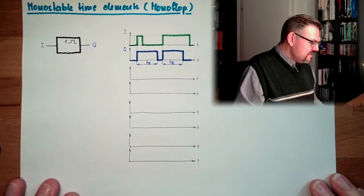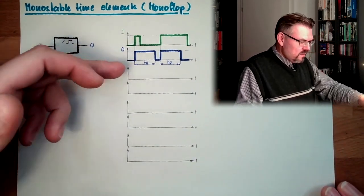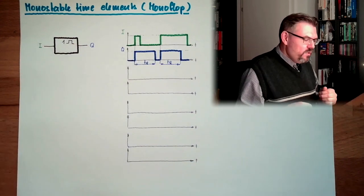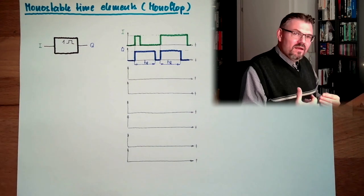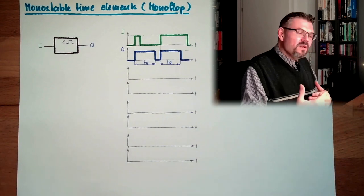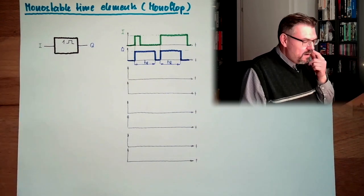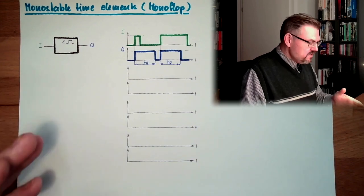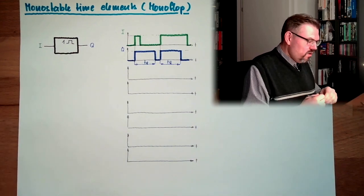So we have one stable condition, in this case it's low, and we have one not stable condition, which will disappear after a certain time, after delay time of this element. Of course, there are variants from this monoflop.